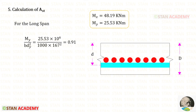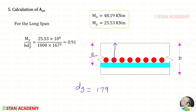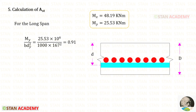Now finding the area of steel for the longer span. The effective depth for the long span, Dy, is found by subtracting one full bar diameter (12 mm) from dx: Dy = 179 − 6 − 6 = 167 mm. Then My/(b·Dy²) = 0.91 N/mm².